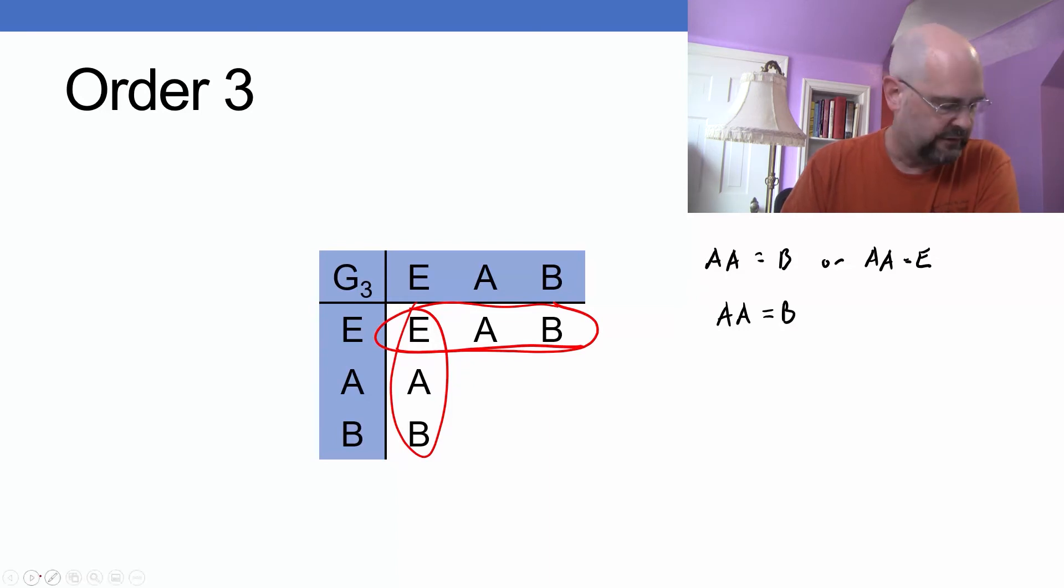My next step, though, is I need to decide what goes in right here. And let's suppose that, let's start with, let's suppose that AA is equal to E.